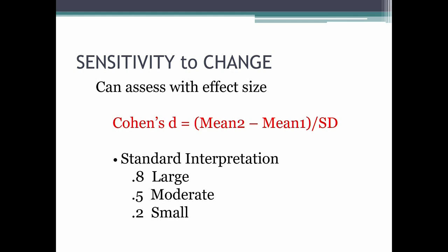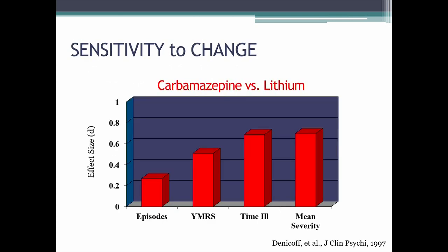Sensitivity to change — or responsiveness — is the ability to detect change. Sometimes you can have reliability and validity but not be able to show a change in measures. To illustrate why sensitivity to change matters, there was a study done in the late 1990s looking at the effects of carbamazepine and lithium on mania. One measure used was a daily rating of manic symptoms.